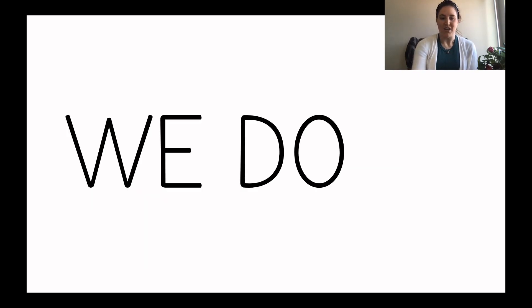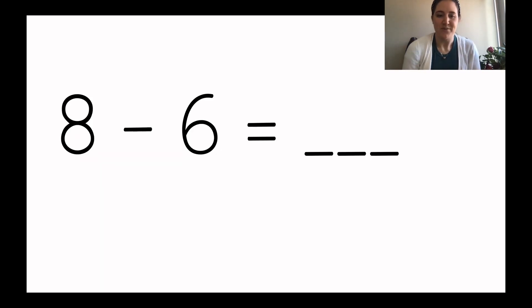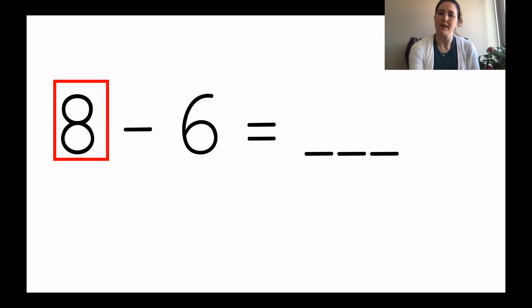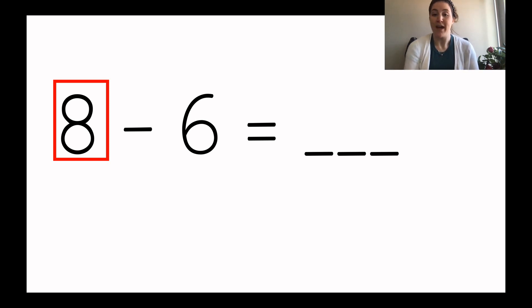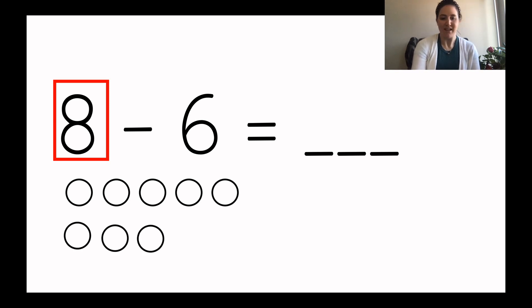Now we're going to solve some subtraction number sentences together using drawings. Are you ready? Get a piece of paper out so that you can draw those circles with me. Let's read this one together: eight minus six equals blank. The eight tells us how many circles we need to draw to start. Draw eight circles on your paper and then I'll draw eight circles up here: one, two, three, four, five, six, seven, eight. Do you have the same thing on your paper?